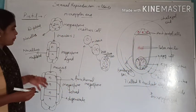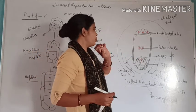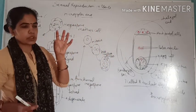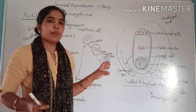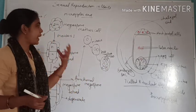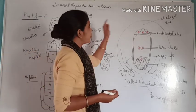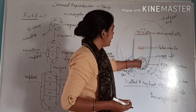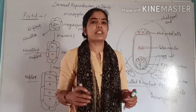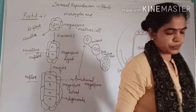Here the female gamete — the egg — is produced. In an earlier video we saw the formation of microspores or pollen grains. The next step will be the transfer of pollen grains to this egg, and after that fertilization — we will discuss this in the next video. Thank you.